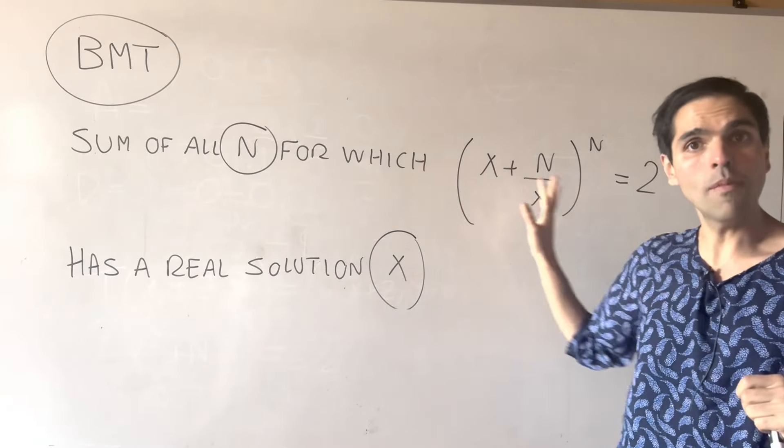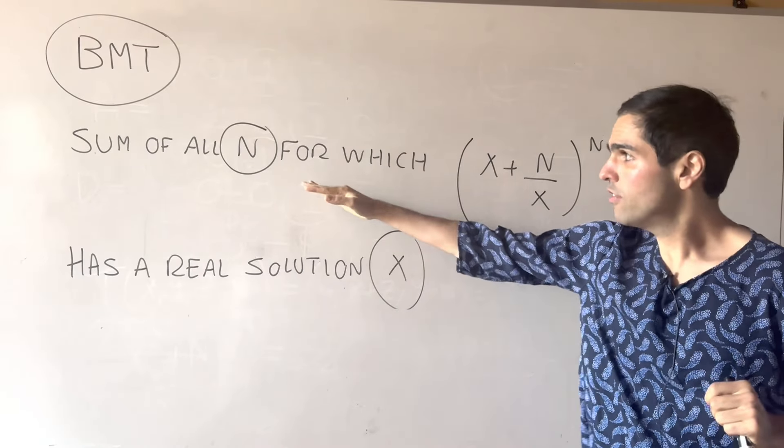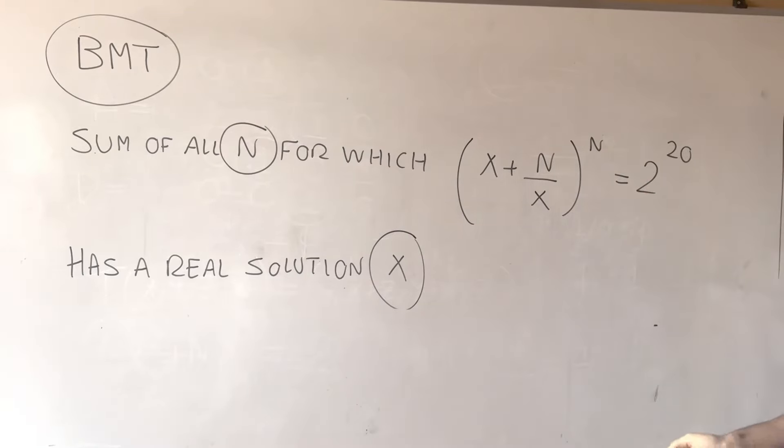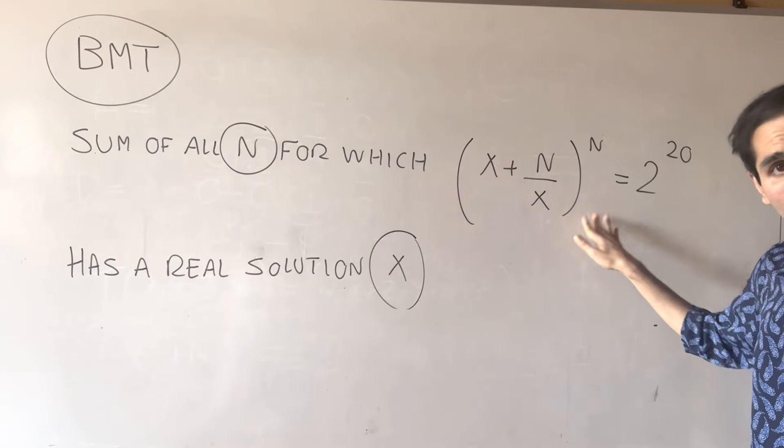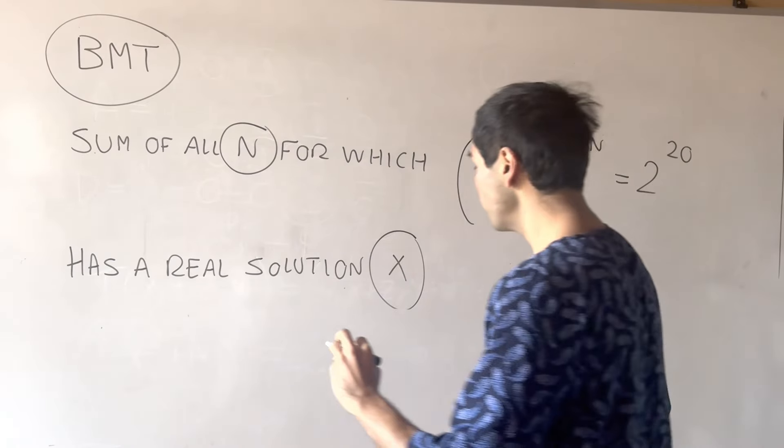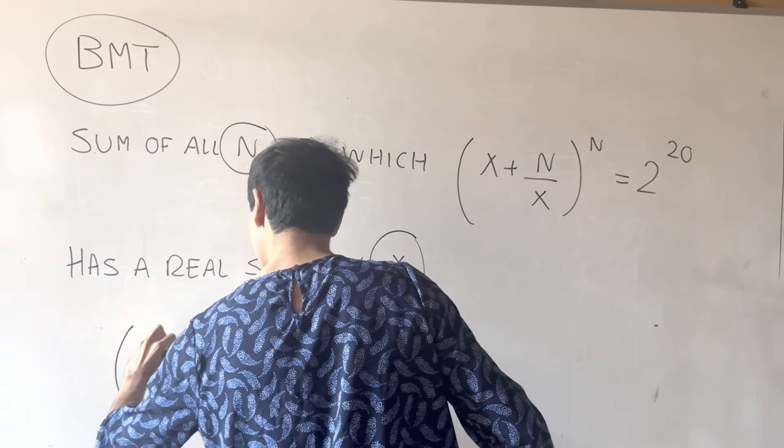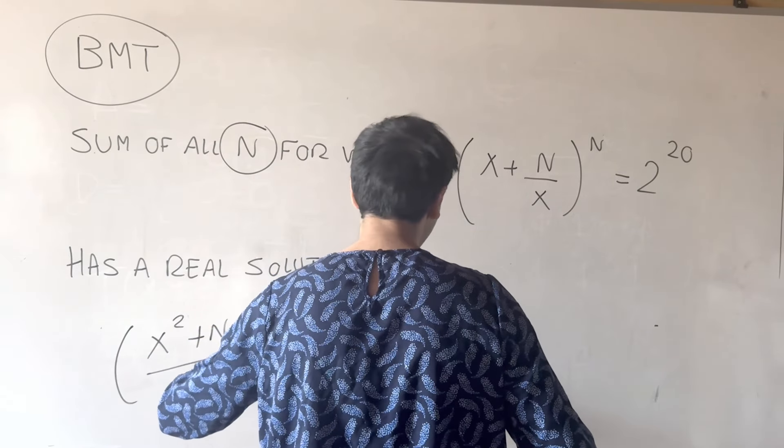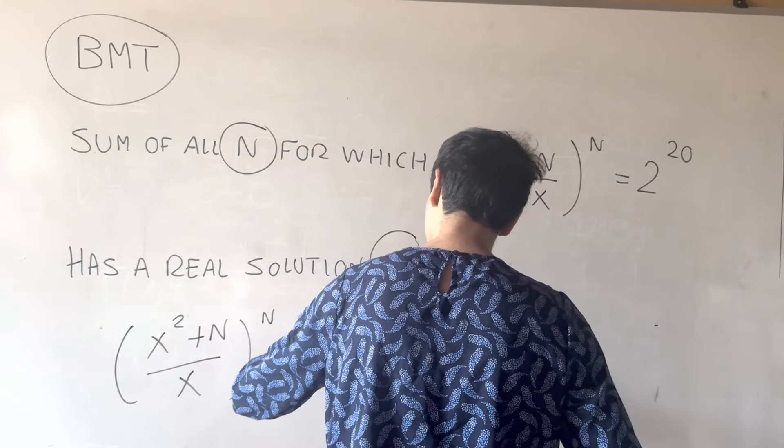So for some n, this has no solution, for others this has a solution, and we want to find a sum of all possible n's. And the way we do this is first you put this on a common denominator to get (x^2 + n)/x^n equals 2^20.